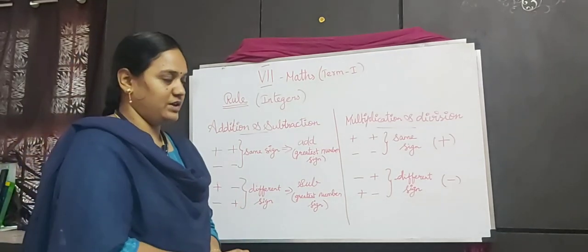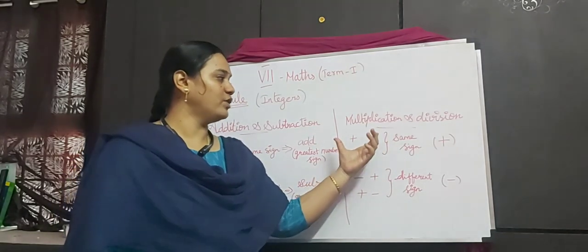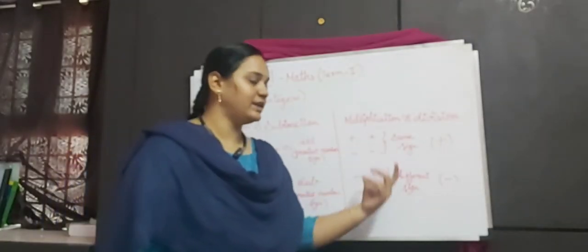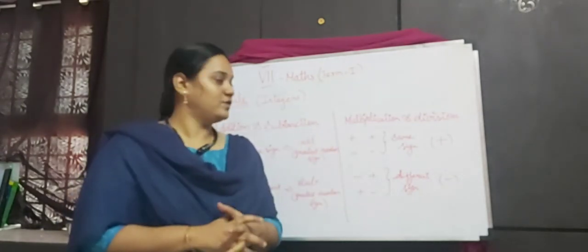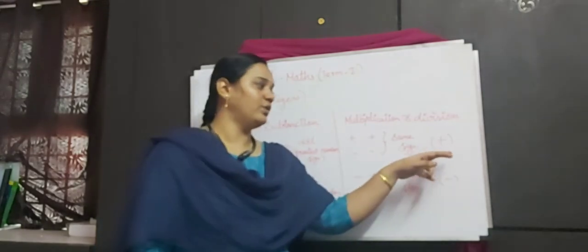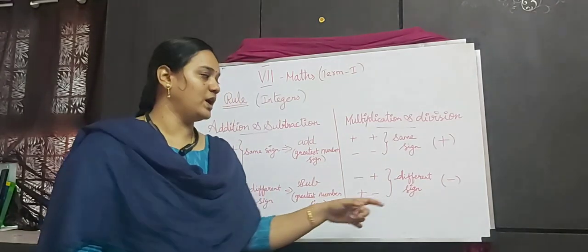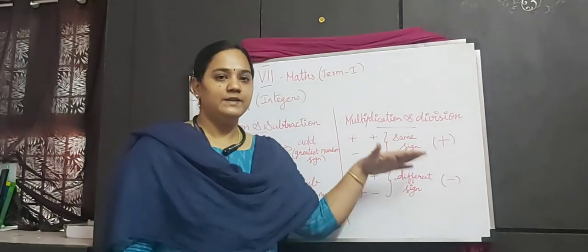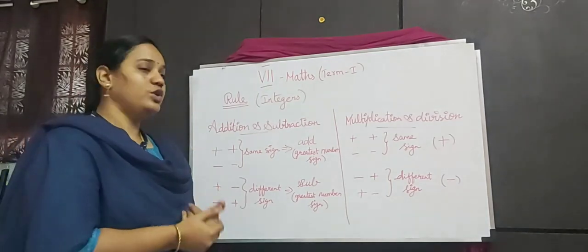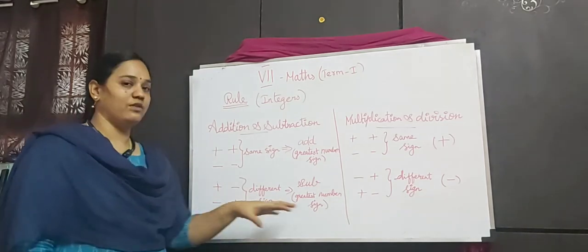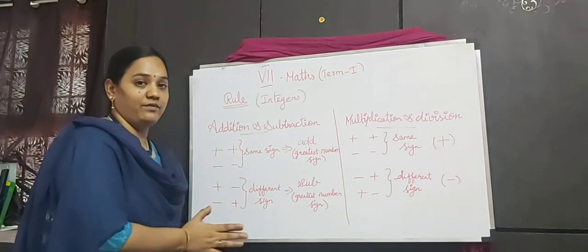For multiplication and division, the operation itself remains the same — we multiply or divide the numbers as normal. The only thing to decide is the sign of the answer. If both numbers have the same sign, write plus for the answer. If both numbers have different signs, write minus. Unlike addition and subtraction, the operation does not change — only the sign rule applies. Let's now look at a question.